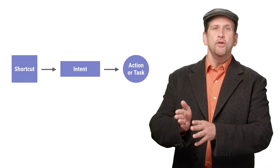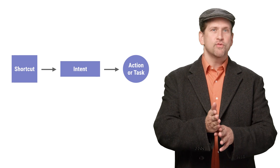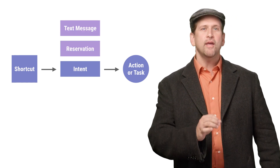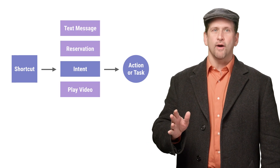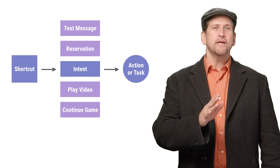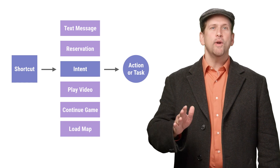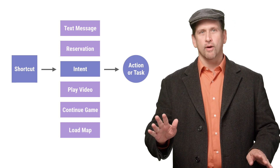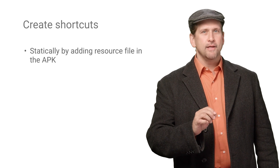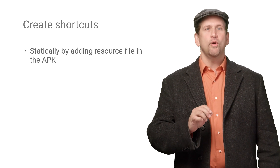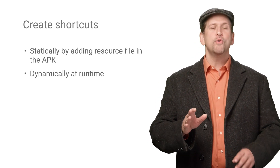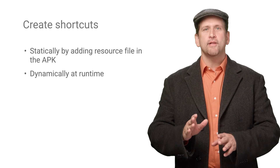For example, you can create intents for sending a new text message, making a reservation, playing a video, continuing a game, loading a map location, and much more. You can create shortcuts for your app statically by adding them to a resource file in the APK, or you can add them dynamically at runtime.